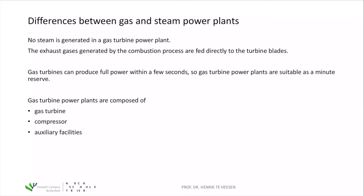The exhaust gases are generated by combustion processes and fed directly to the turbine blades, so they drive the turbine and the generator. One big advantage is that gas turbines can produce at full power within seconds — you just need to add the natural gas and burn it. Gas turbines can be available on the grid within seconds or a minute, and the concept is rather simple.